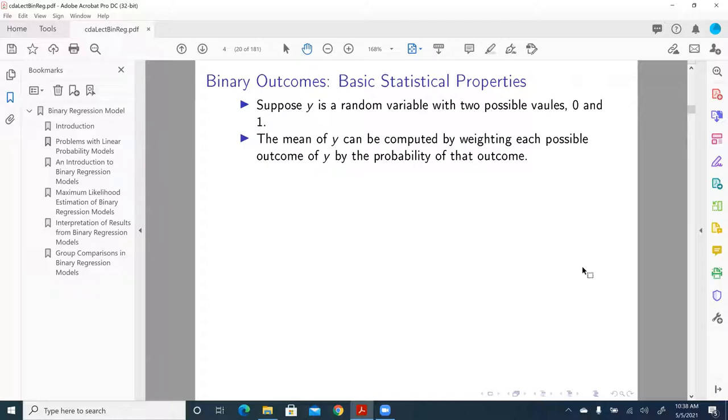Then, the mean of y can be computed by weighting each possible outcome y by the probability of that outcome. That is basically application's definition of mean. So, let's say we have a binary response variable coded as 0 and 1.